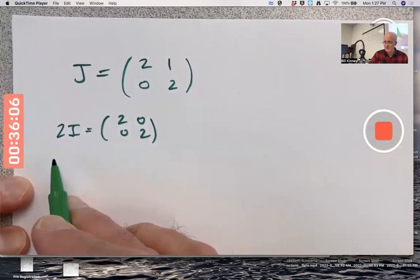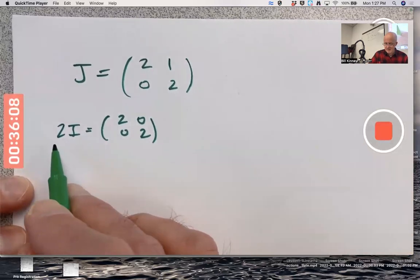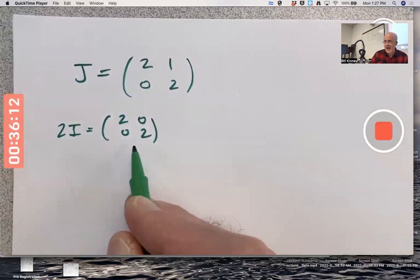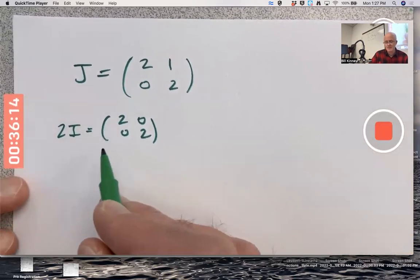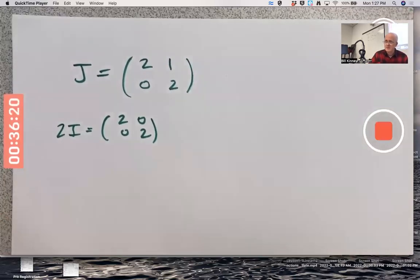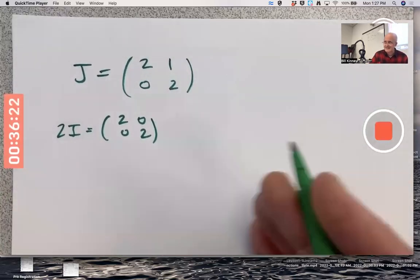Any P you would come up with and multiply P inverse times this matrix times P is going to give you the same matrix back because this matrix commutes with every other square two by two matrix. The P and P inverse would still cancel even though they're on opposite sides of the two I.